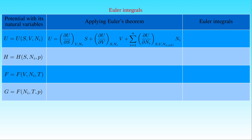We already determined these partial derivatives: the first equals temperature T, the second equals minus pressure P, and the third equals the chemical potential μᵢ. As a result, the internal energy U is equal to T times S, minus P times V, plus the sum of μᵢ times Nᵢ from i equals 1 to N.